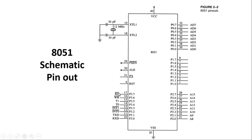The remaining Port 3 pins are RD bar and WR bar — read bar and write bar — used for interfacing external RAM to 8051. When we want to read from external RAM, the RD bar pin is made low; when we want to write to external RAM, the WR bar pin is made low. The reset pin is an active-high pin; when made high, the CPU resets and starts executing the program from address 0000h.